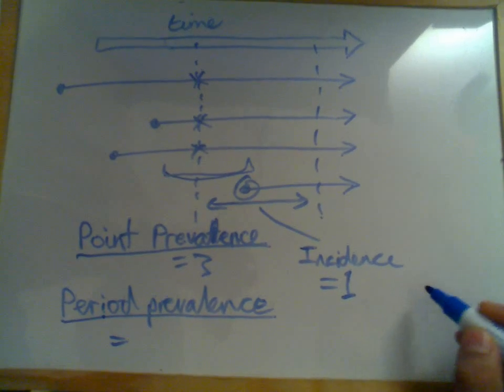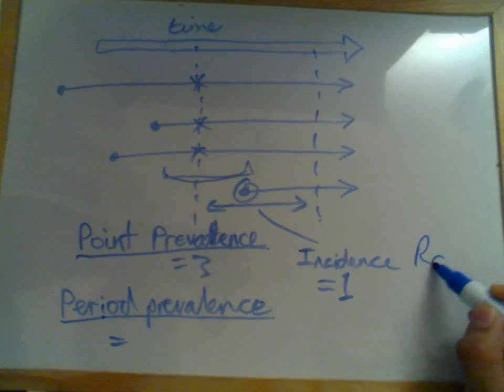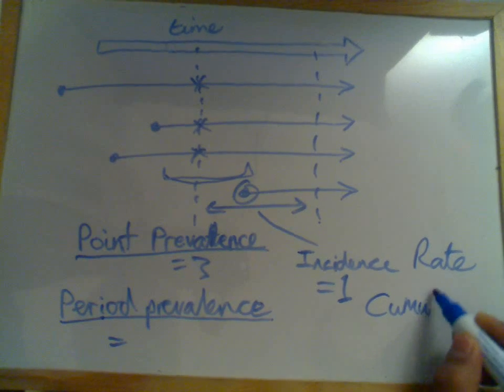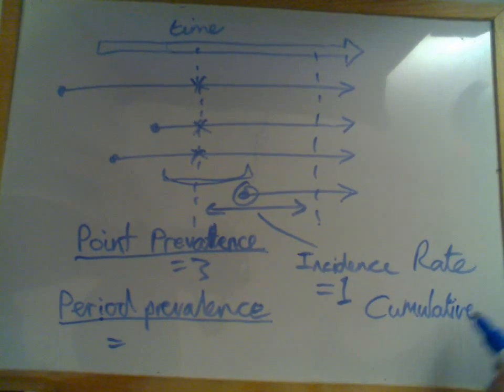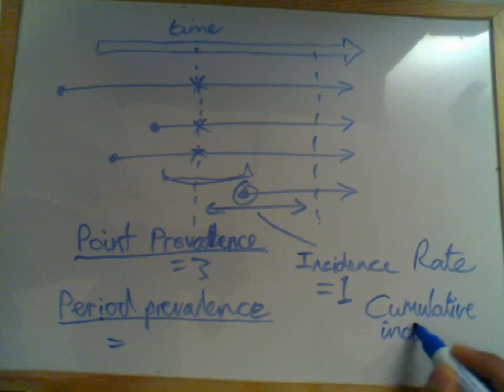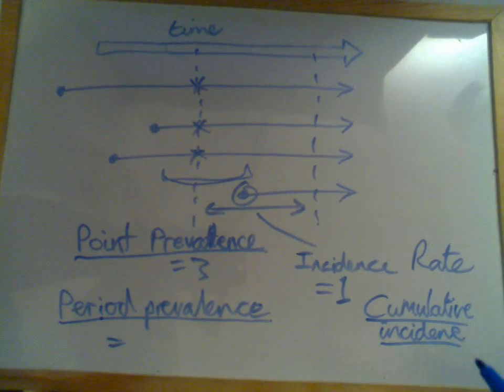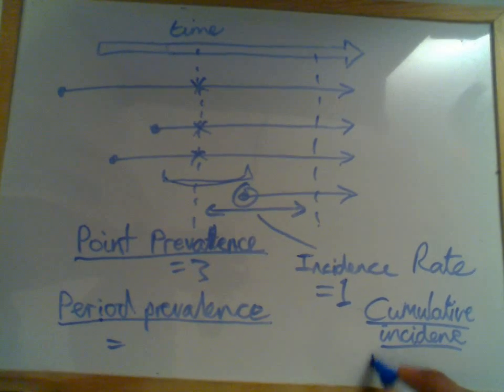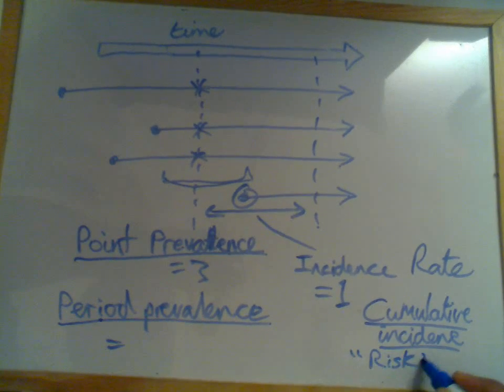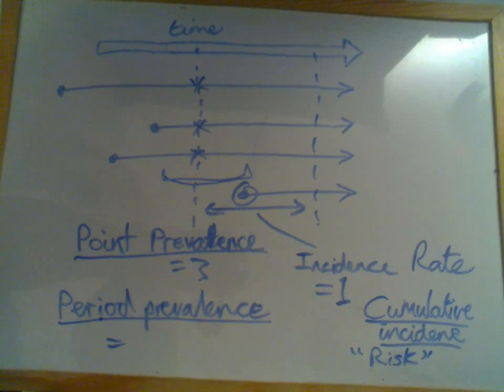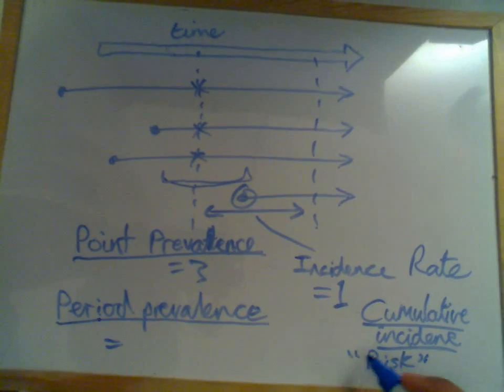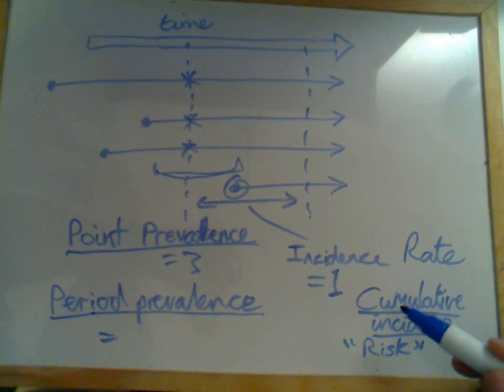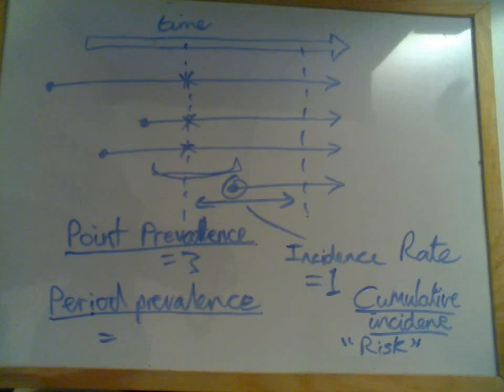Now with incidence, we also have two types of incidence. We have incidence rate and we have cumulative incidence. Cumulative incidence is also used interchangeably with the term risk, which I'm going to talk about probably in the next video. So cumulative incidence risk. When people say risk, they often mean cumulative incidence. They tend to be used interchangeably.